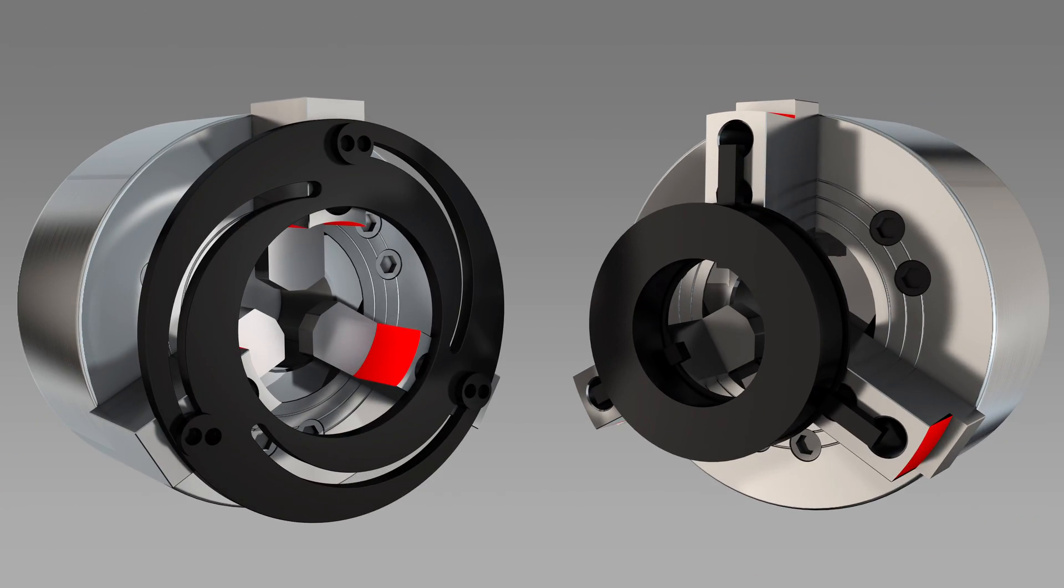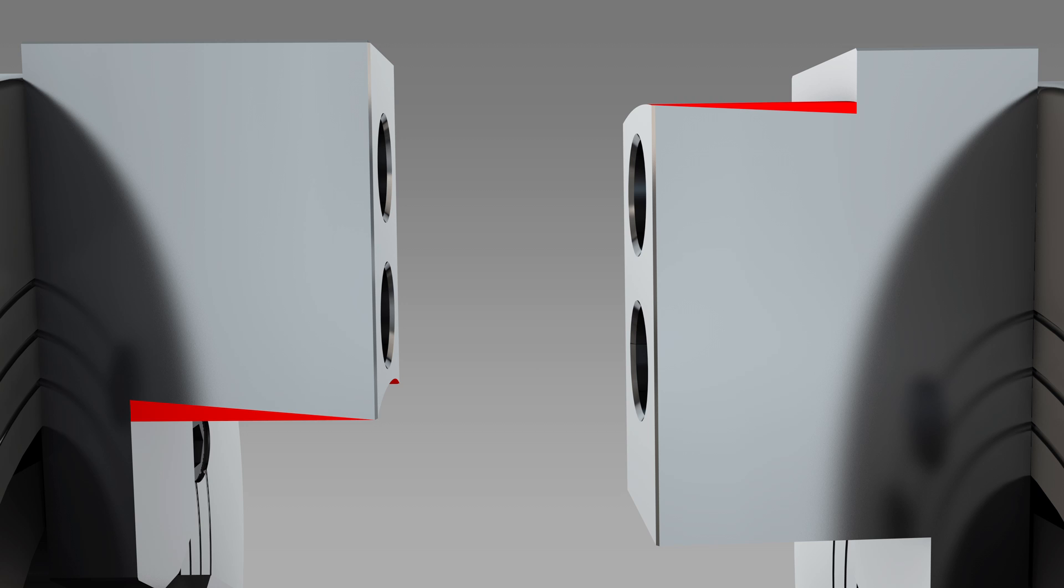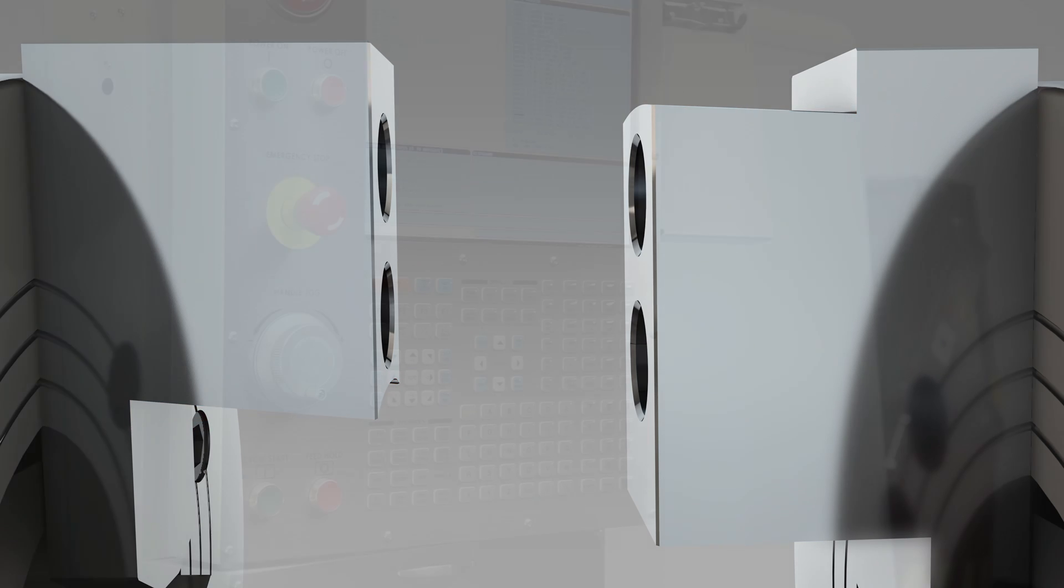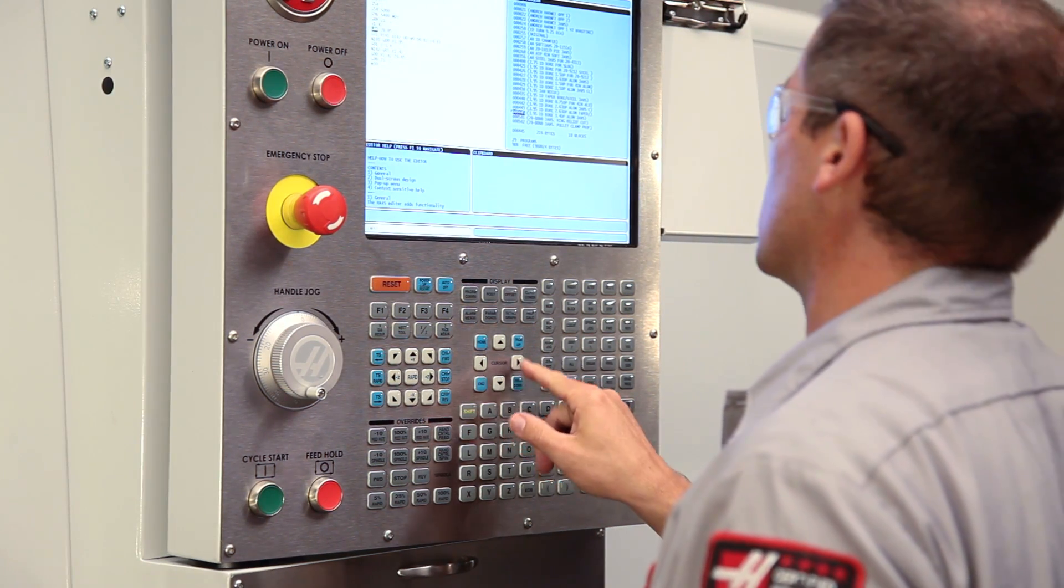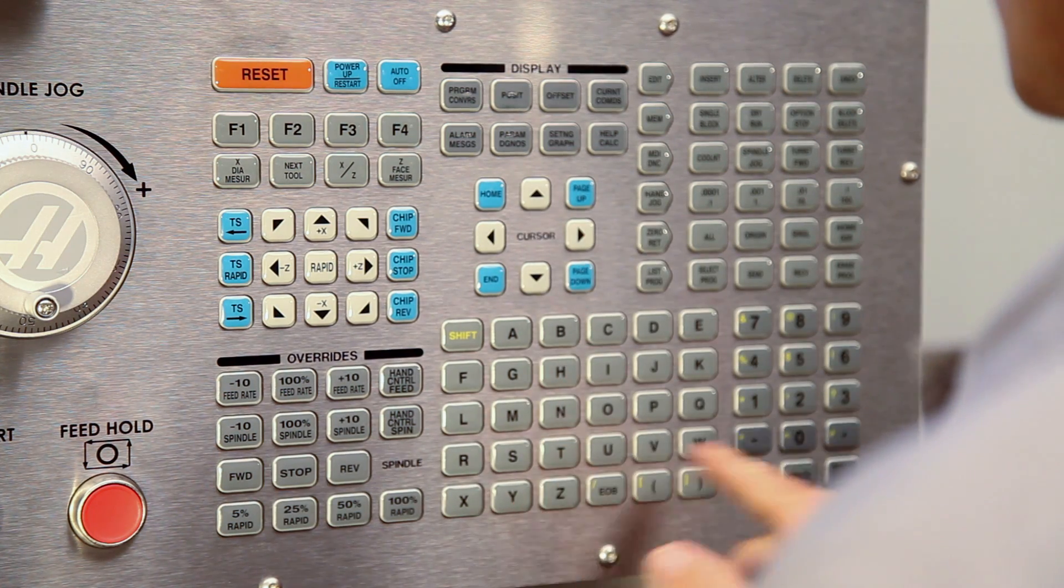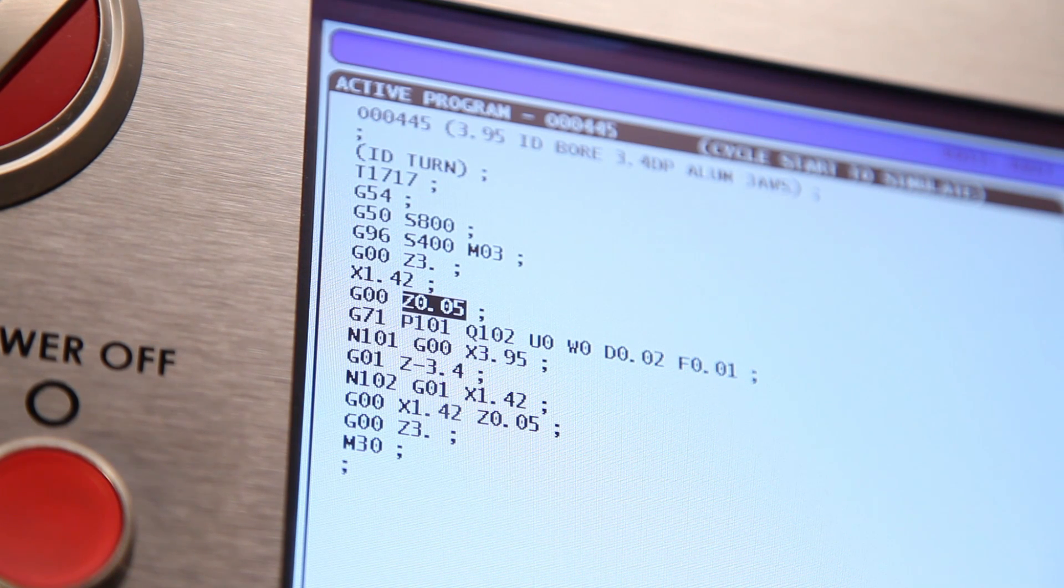For both outside holding and inside holding jaws, you should cut the taper to leave more material at the jaw tip than at the jaw base. Going back to his original program, Andrew changes the starting point of the cut from Z0.05 to Z0 to start right at the face of the part.